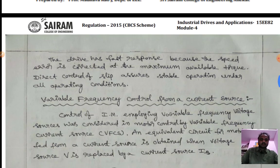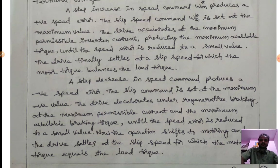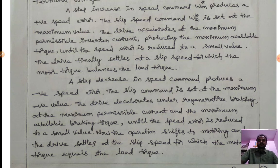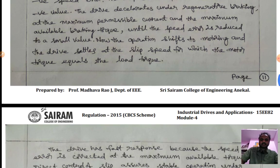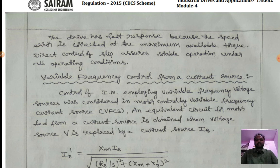To summarize: when the step increases, the motor drive accelerates; when the step decreases, the motor drive decelerates. The drive has fast response because the speed error is corrected at maximum torque. Direct control of slip assures stable operation under all motor and four-quadrant operation conditions.